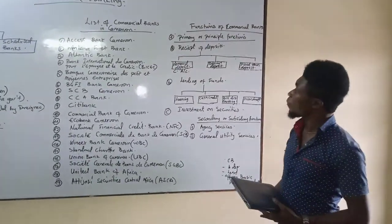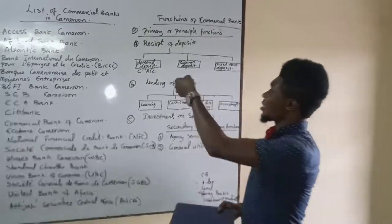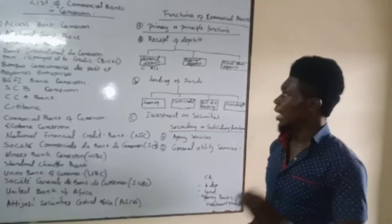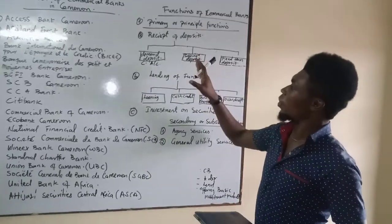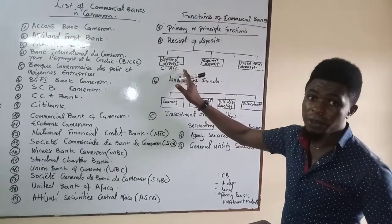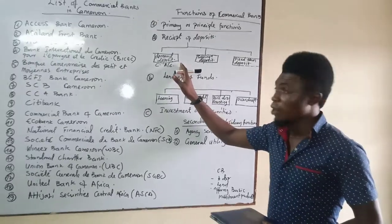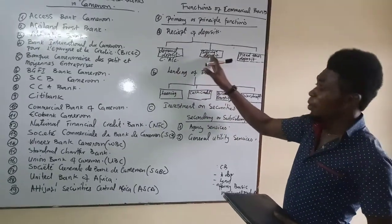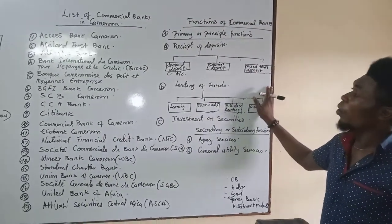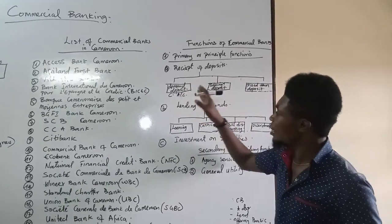The very first primary function of commercial banks is that they accept deposits. These deposits are accepted on three different accounts: the demand deposit account, otherwise known as a current account; the savings deposit account; and the fixed-term deposit account. When commercial banks accept deposits, they are accepted on the basis of these three different accounts.